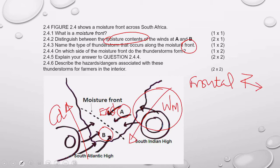Question 2.4.5 is covered because you are explaining your answer above. Just to make sure we touch the right points to get the right marks: on the western side you have cold, dry air, which is heavier, has higher molecular density, and is more aggressive and moves fast. It lifts the warm, moist air that is on the east, and that air rises — the correct geographical term is convectional rising — leading to condensation and ultimately precipitation, thunderstorms, and lightning on the east.